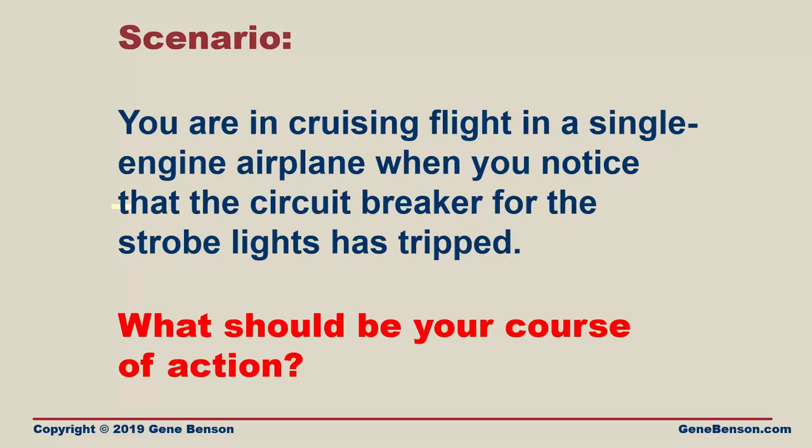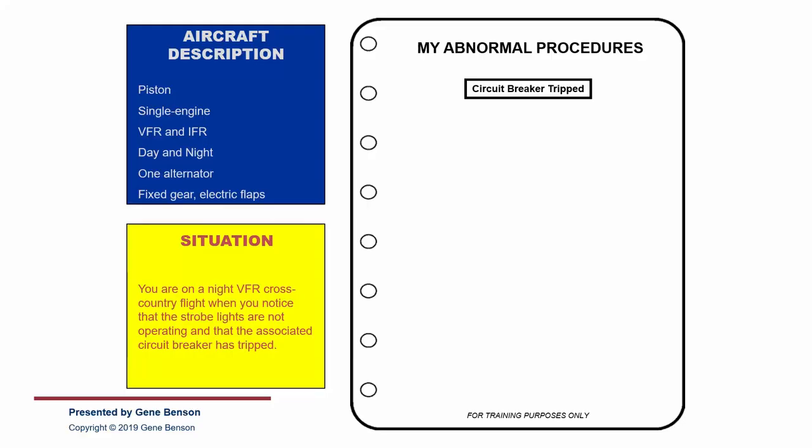Here is another scenario. You are in cruising flight in a single-engine airplane when you notice that the circuit breaker for the strobe lights has been tripped. What should be your course of action? You are on a night VFR cross-country flight when you notice that the strobe lights are not operating and the associated circuit breaker has tripped. Note that we are not going to write a procedure for each circuit breaker, but a procedure that will cover all circuit breakers. Remember, this isn't the only way to do it — you will determine what works best for you and your comfort level.